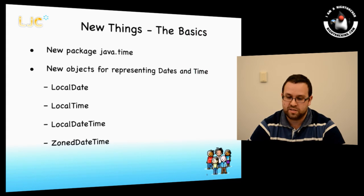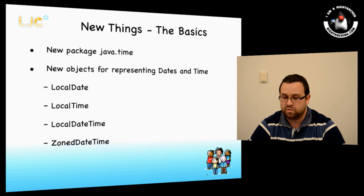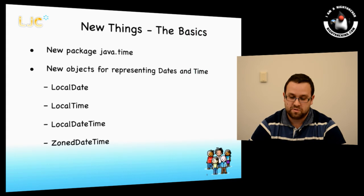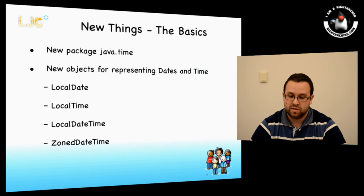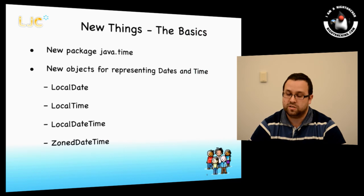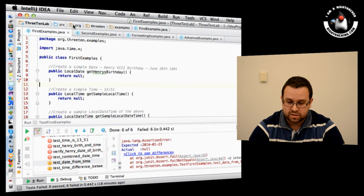So we're going to go through the basics. There's a new package in Java 8 called java.time, and we now have proper objects for representing date and time separately and together. A LocalDate is just a date with no time attached. A LocalTime is just a time with no time zone. A LocalDateTime is a combination of LocalDate and LocalTime, and a ZonedDateTime brings time zones into the mix as well. Let's skip to the IDE.